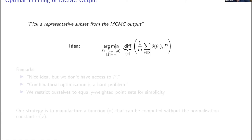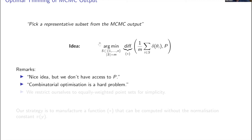Here's what we need to do formally: find a subset of states theta_i visited by the Markov chain such that the uniformly weighted empirical measure supported on that subset minimizes the difference between itself and the posterior we'd like to approximate. Two obvious remarks: first, you don't know the posterior, so how can you quantify the difference? Second, you've written argmin over sets of size m, which is a combinatorial optimization problem and probably very hard. We don't need to consider only uniformly-weighted empirical approximations, but it's convenient, so let's proceed this way.